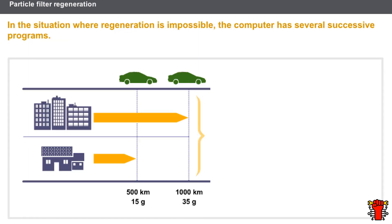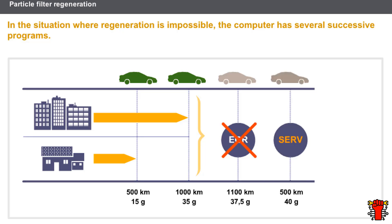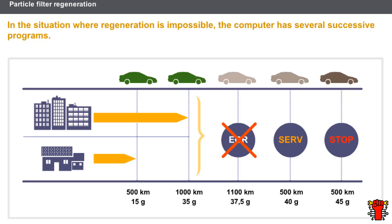In the situation where regeneration is impossible, the computer has several successive programs. Firstly, the computer deactivates the exhaust gas recirculation to restrict the production of additional particles. Secondly, a level 1 warning message appears on the instrument panel, encouraging the driver to carry out a driving cycle enabling a regeneration to be carried out. If the regeneration is still not carried out, there is a risk of the filter clogging. The stop warning light comes on, the engine operates in defect mode, and it is impossible to carry out the regeneration procedure. In this case, the vehicle must be taken to a Renault dealer.